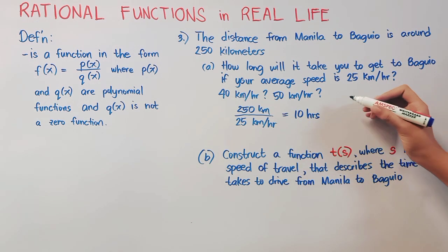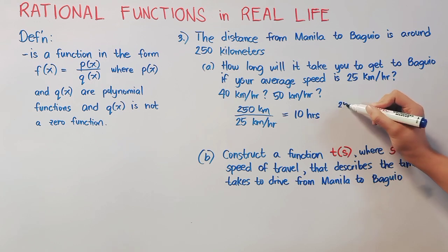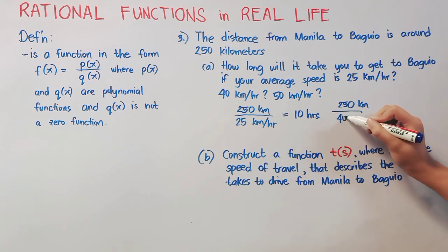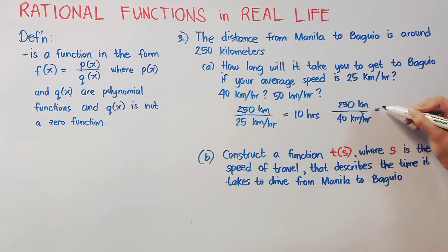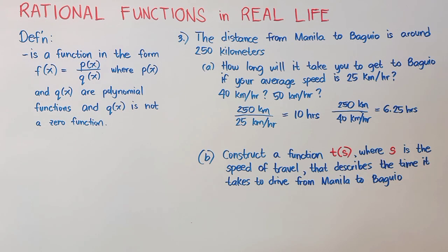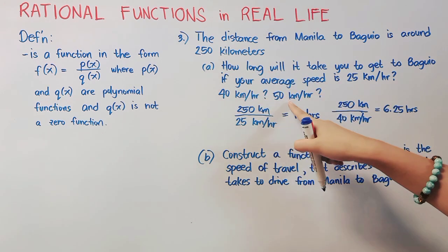Now, let's proceed to 40 kilometers per hour. Taking the same distance, we have 250 kilometers, but this time it's over 40 kilometers per hour. So, we'll simply divide 250 by 40, then it will give us 6.25 hours. So, it will take us 6.25 hours to get to Baguio if our average speed is 40 kilometers per hour.